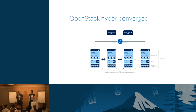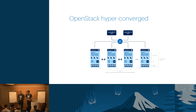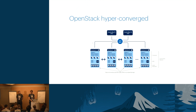If one node dies, you can just pull the power. The storage keeps working — you don't lose anything from your volumes. At the same time, the VMs will simply live-migrate to one of the other nodes. Full support for both pets and cattle workloads.